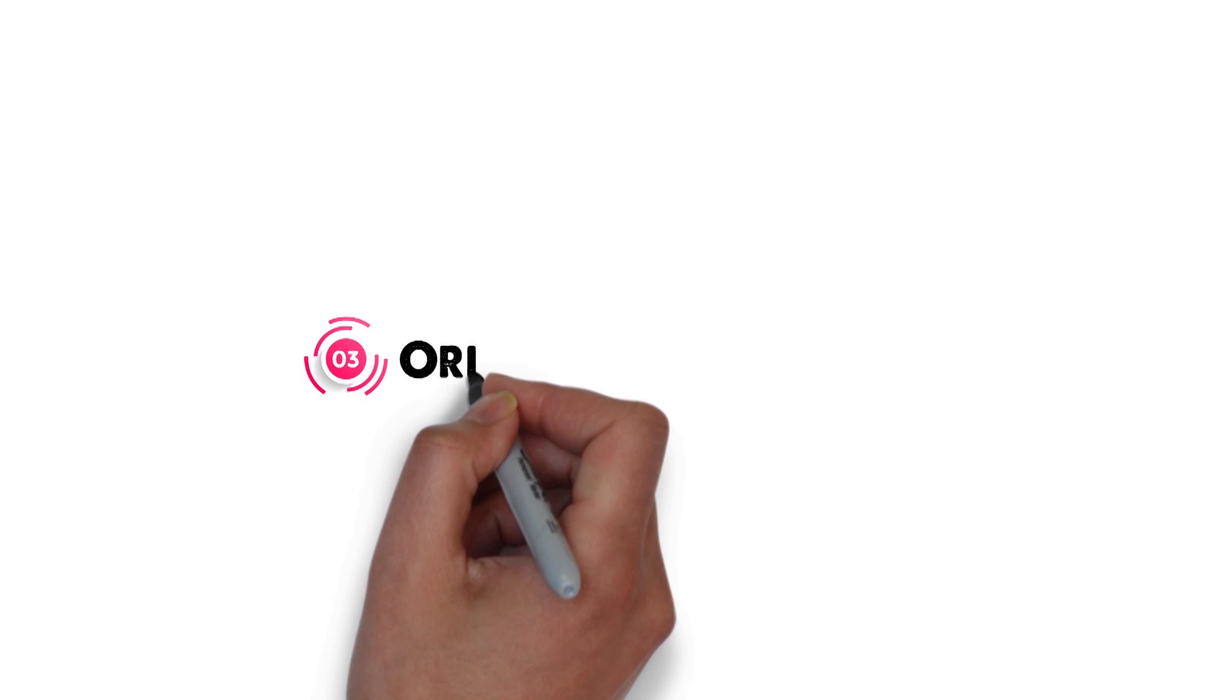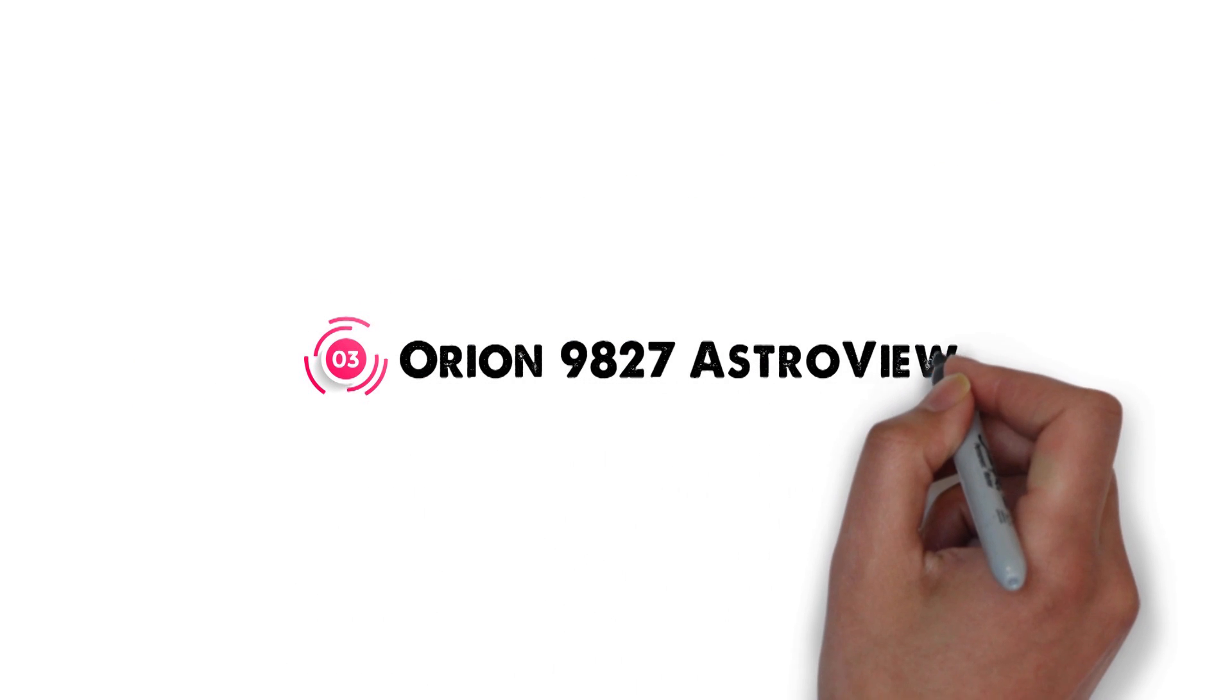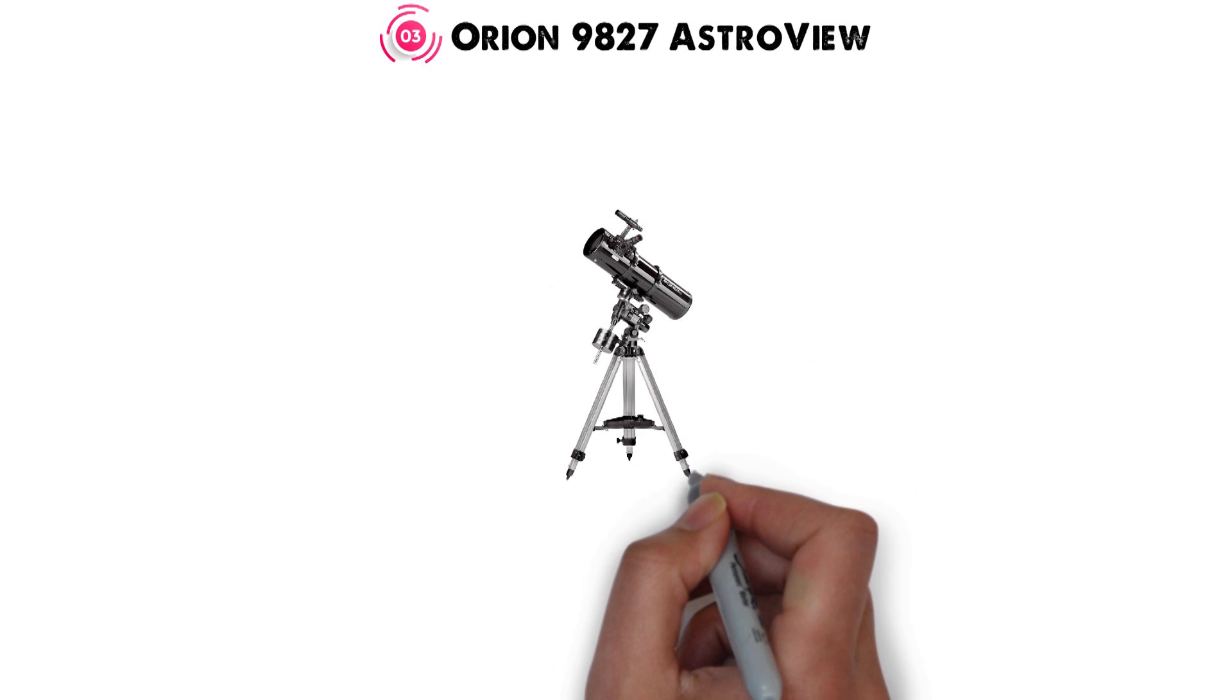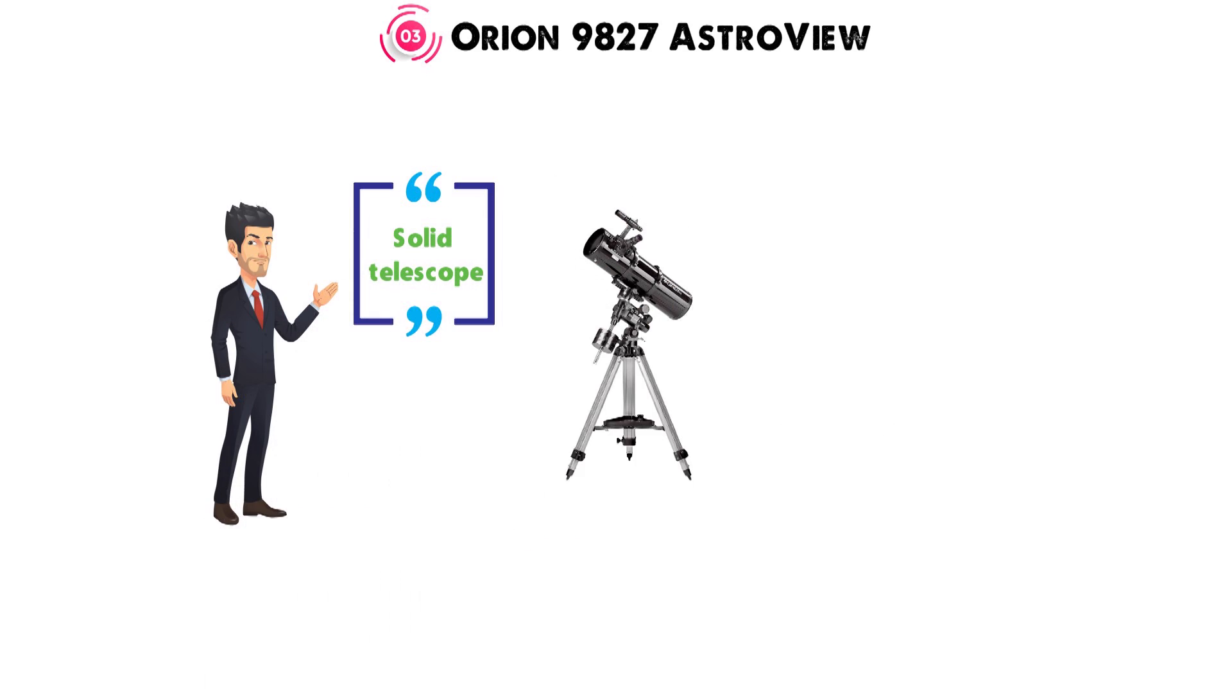At number 3 we have the Orion 9827 Astroview. The Orion Astroview is a pretty good option for anyone looking for a solid telescope that gives a nice quality of image. It has an increased aperture from the cheaper telescopes I've talked about.